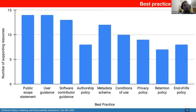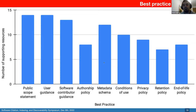You can see that the most popular practices are providing a public scope statement and instructions both for users and developers. Where we need a little bit more work is in the authorship policy, retention policy, and end-of-life policy associated with each of these resources.